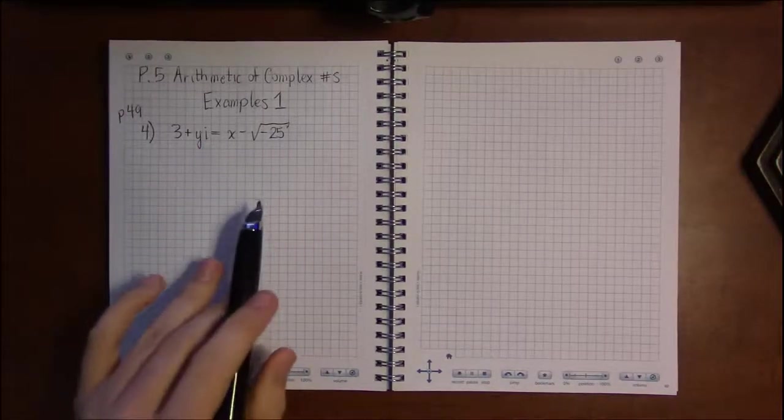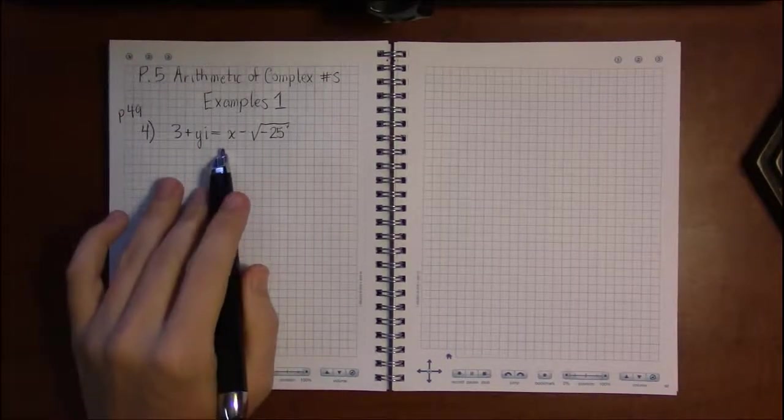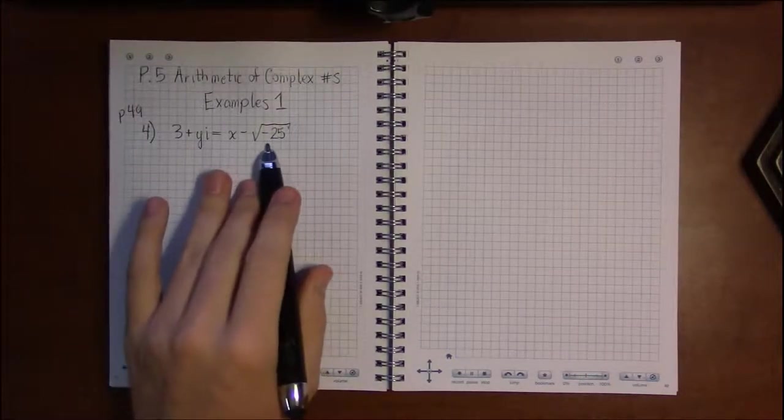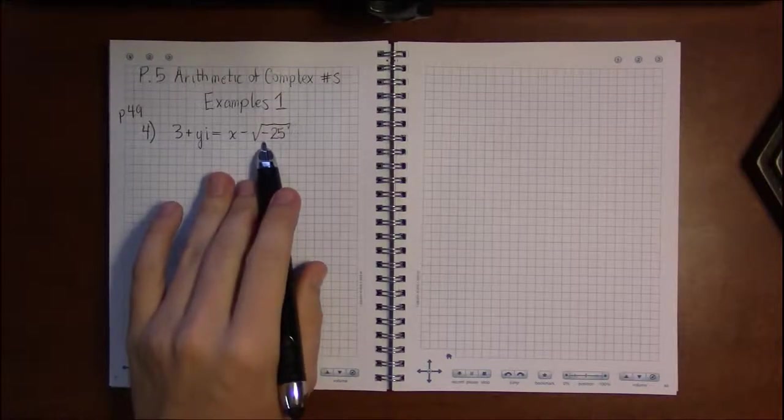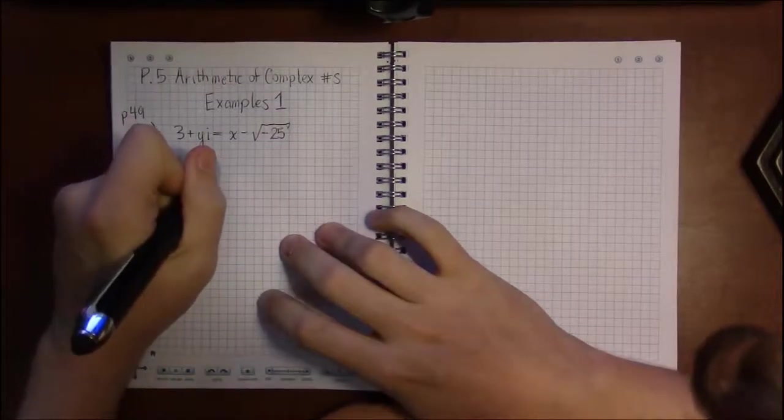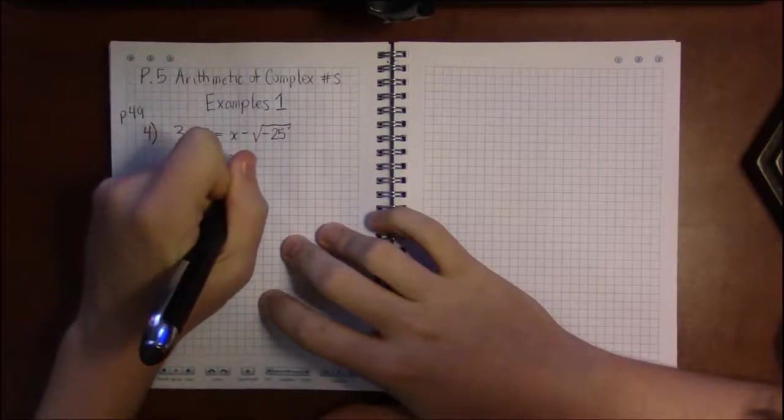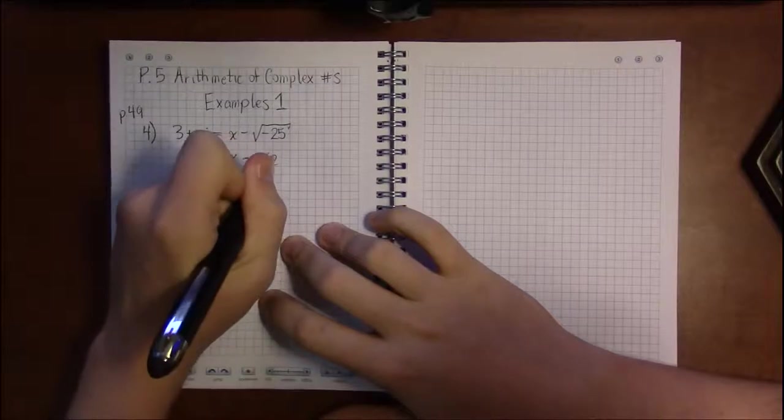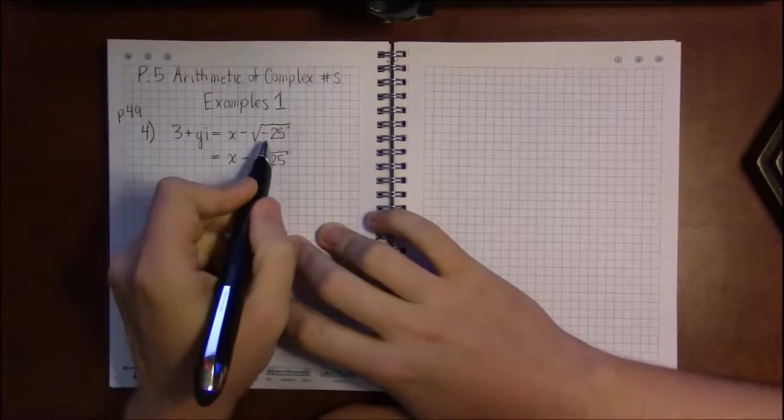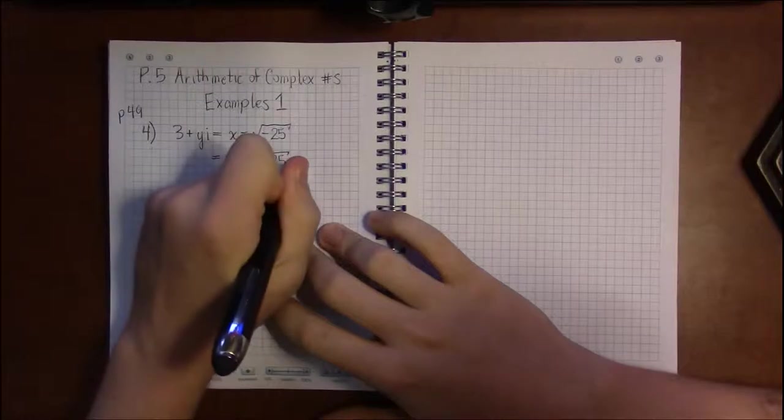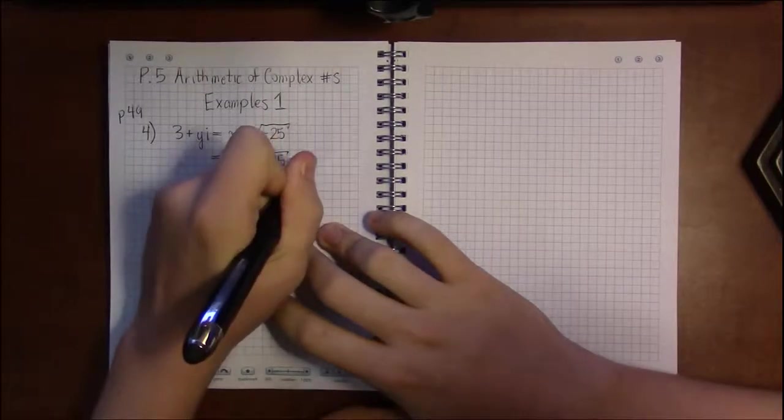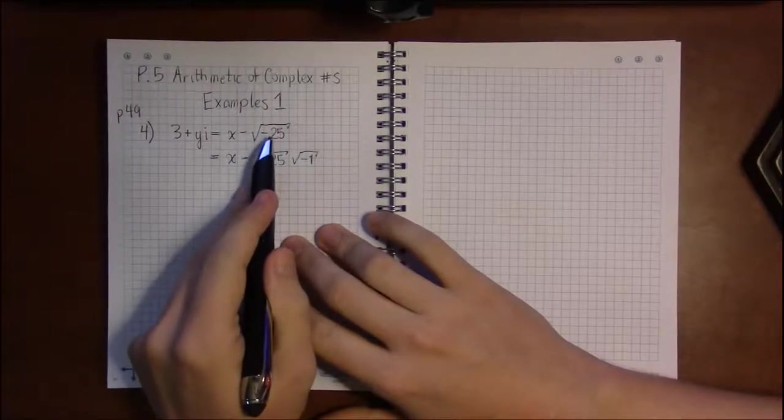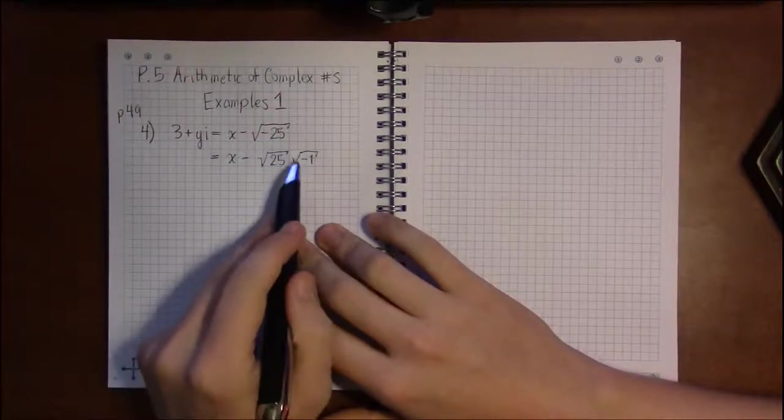The problem is I don't see any i's over here. Well that's because we can simplify square root of minus 25. If we work with this a little bit, use properties of exponents or radicals, we can write this as square root of 25 times square root of minus 1, because minus 25 is just minus 1 times 25.